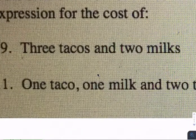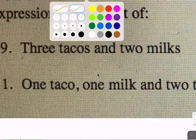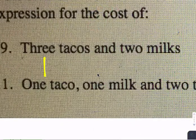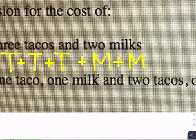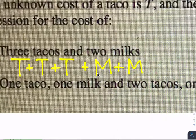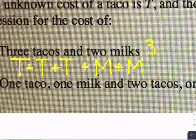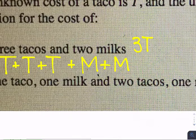There are two ways that you could do this. We have three tacos, so taco plus taco plus taco, and two milks, so plus M plus M. Or you should simplify. How many tacos do I have? I have three tacos, so I can do three T, and I have two milks, so plus two M.